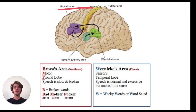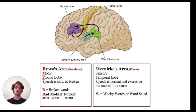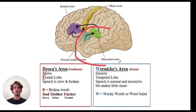Broca's area is in charge of motor movement and initiation. Then we have Wernicke's area, which is located in the temporal lobe, which is responsible for sensory processing. Understanding the locations of these two areas can help us understand their function.